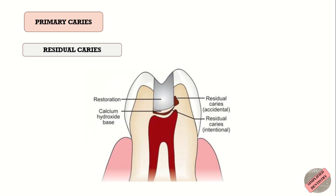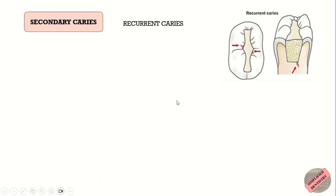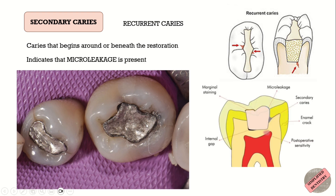The fourth type is residual caries. Caries that remains after cavity preparation has been completed is referred to as residual caries, which may have been left behind either intentionally by the operator or by accident. Secondary caries, also referred to as recurrent caries, begins around or beneath the restoration. This condition usually indicates that micro-leakage is present along with other conditions leading to caries development.